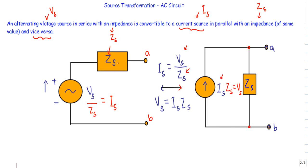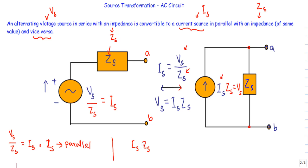If I have a voltage source Vs in series with an impedance Zs, and I divide Vs by Zs, I get the value of current source Is, and I place impedance Zs in parallel with that current source. Or if I have a current source Is and multiply it by the parallel impedance Zs, I get the value of voltage source Vs, and I place the impedance Zs in series with the voltage source.